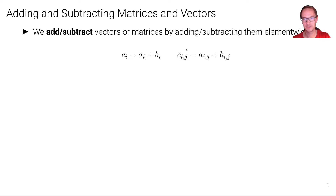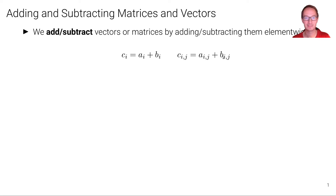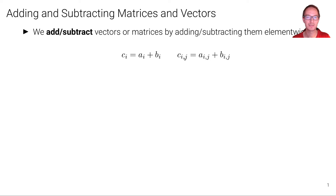Similarly for matrices we just have two indices. We take for example the upper left element of matrix A, which is A11, and add the upper left element of matrix B, which is B11, and this yields the upper left element of matrix C, in other words C11.